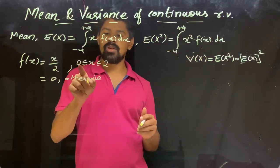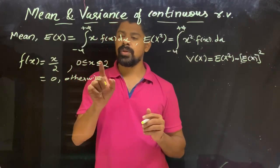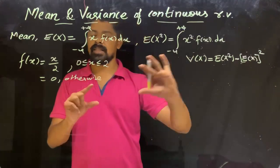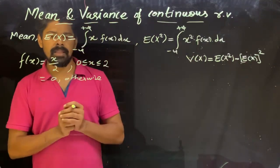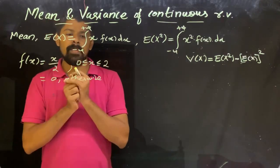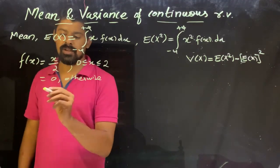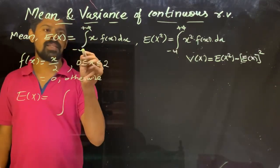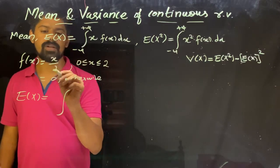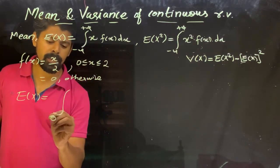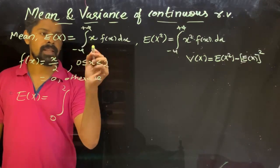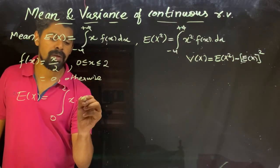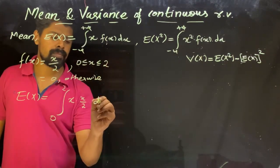So, for finding E(x), we need a formula. E(x) is equal to the integral from minus infinity to plus infinity of x into f(x) dx. Since f(x) = x/2 and the range is 0 to 2, this becomes the integral from 0 to 2 of x into x/2 dx.